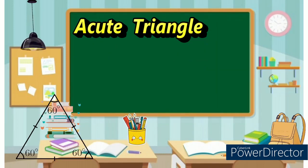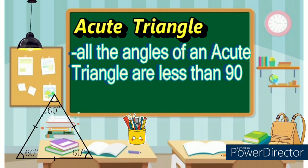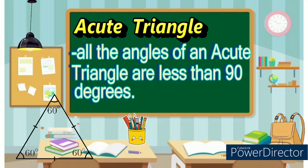Next, acute triangle. All the angles of an acute triangle are less than 90 degrees.